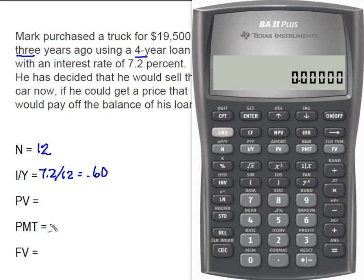We also calculated that his payment, which we're going to enter as a negative, was $468.76. He's looking to pay off the loan, that means a future value of zero. So when we compute this present value here, that's going to be his current outstanding loan balance and how much he'll need to get for the vehicle in order to sell it.